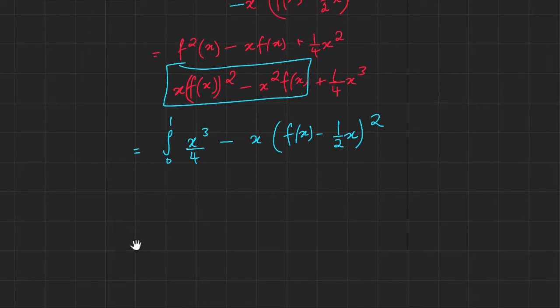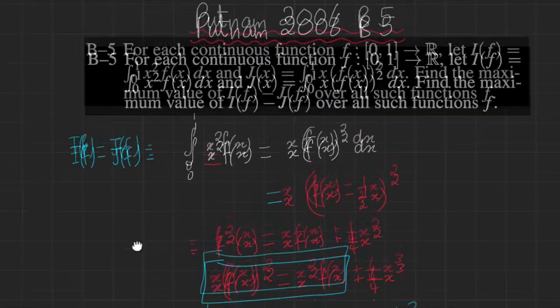And just for sanity's sake, we can expand this out all over again. We see that this would be f²(x) times x, this would be plus x² f(x), and this would be minus ¼x³. The ¼x³ and this cancel out. So all we're just left with is -x f²(x) + x² f(x), which is actually exactly our integral.